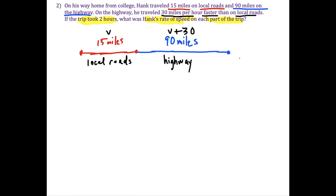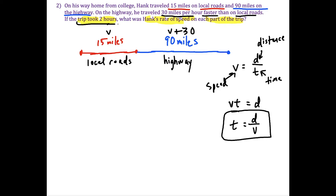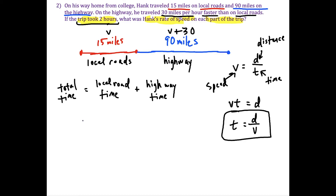To answer this, the major formula is V equals D over T, where V is Hank's speed, D is the distance, and T is the time. We can rearrange this to T equals D over V, which is the one we'll use most. We'll combine that with the information that the total trip took two hours. The total time equals the time on local roads plus the time on the highway.